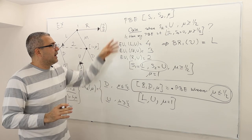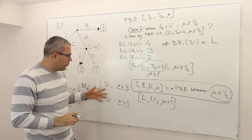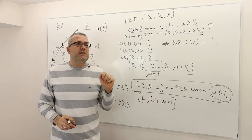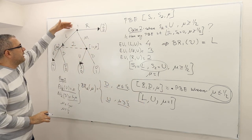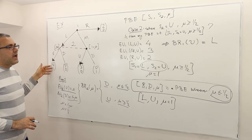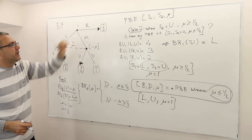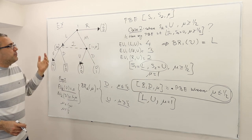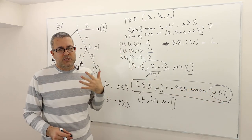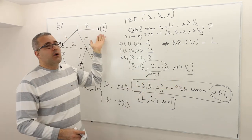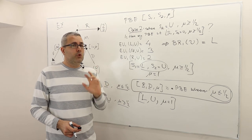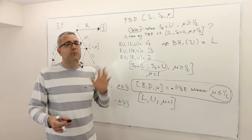Conclusion: I finished both case one and case two. I found two groups of PBE. One is player one plays left, player two plays U with belief mu equals one, giving payoffs of four and one. The other set of PBE is player one plays right, player two plays D, with mu less than or equal to one half, giving payoffs of two and two — infinitely many but all outcome equivalent. That's all the PBE in pure strategies. There might be some PBEs in mixed strategies, but we're not worried about them.